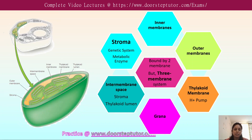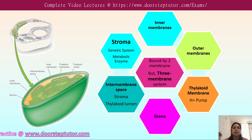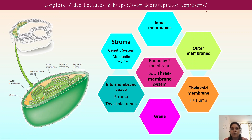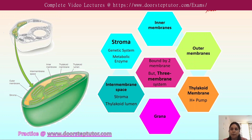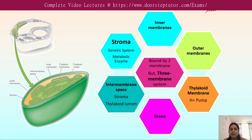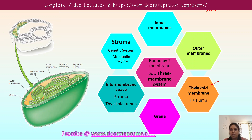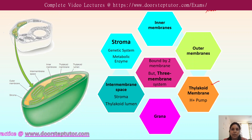Now we will discuss the structure of the chloroplast. The chloroplast is a complex and large organelle, ranging in size from 5 to 10 micrometers long. It is bounded by a double membrane — the chloroplast envelope — composed of an outer membrane and an inner membrane. Besides these two membranes, a third membrane is also present, known as the thylakoid membrane. Due to these three different membranes, the chloroplast is divided into three compartments, making it a much more complex cell organelle.